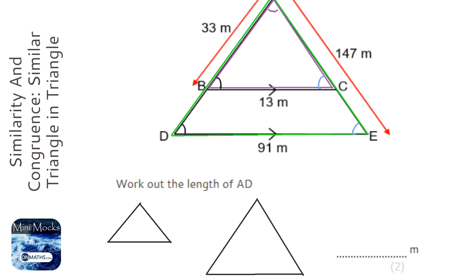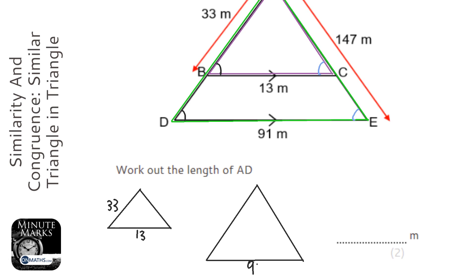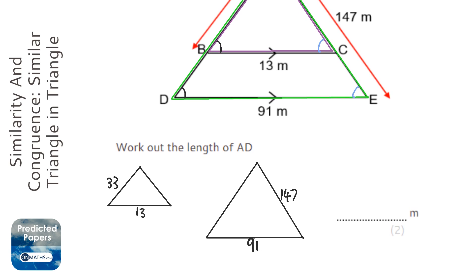Let's fill in the missing lengths. So we've got 33 here, 13 at the bottom here, 91 at the bottom here, and 147 here. And we're asked to find length AD, and now AD is going to be this one, so length AD.